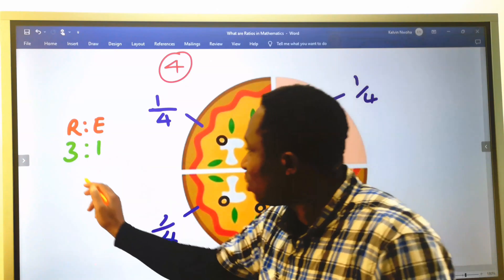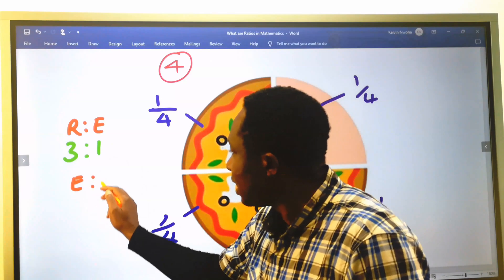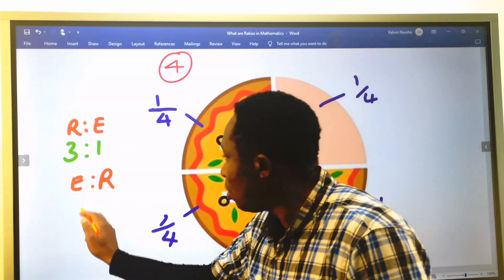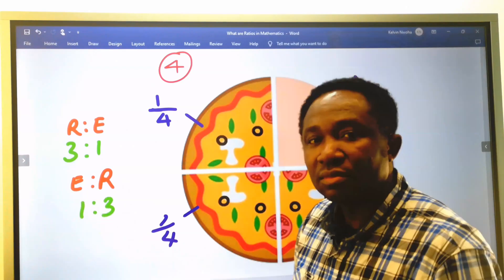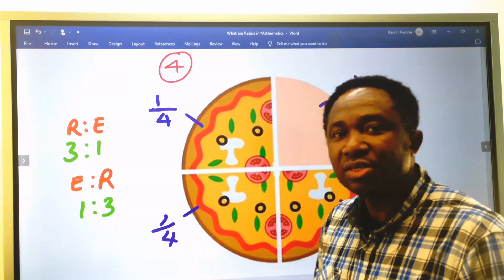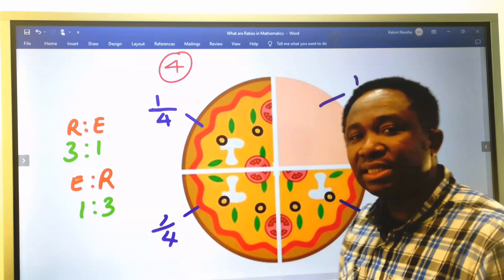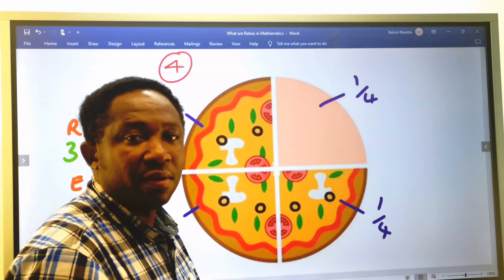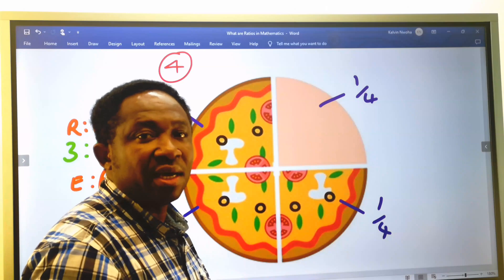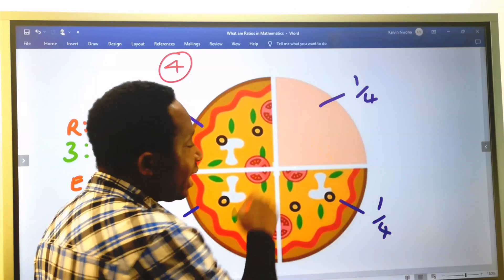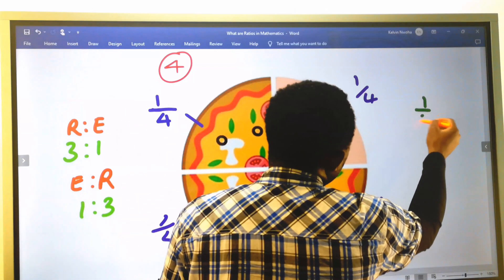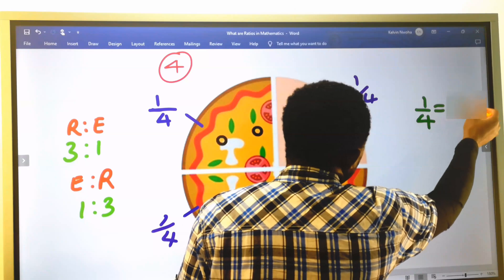But if I consider the part that was eaten against the remaining portion of the pizza, that will become 1 to ratio 3, and this is part to part. We are considering the part that was eaten against the part that is remaining. But if I want to consider the part that was eaten with respect to the entire sliced pizza, this will become 1 to ratio 4.